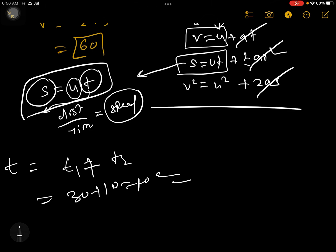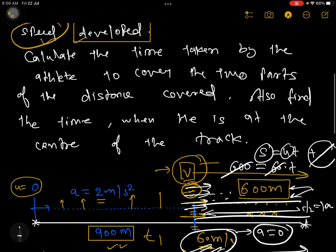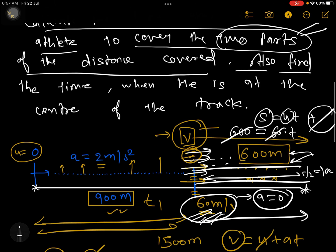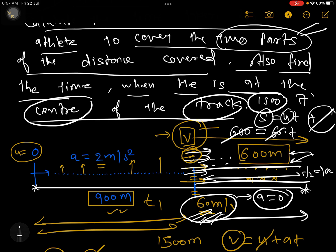But now we have a further question. They are asking to calculate the time taken by the athlete to cover the two parts of the distance covered. For both the parts our job is over, we have solved the numerical. But after that we also have to find the time when he is at the center of the track. Center of the track means track length is 1500, so center will be at 750 meters, because they are asking at the center.